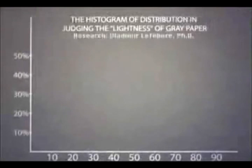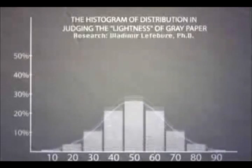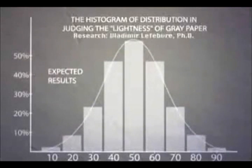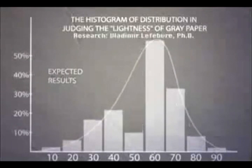For example, when you ask people to judge how dark a piece of grey paper is, the answers don't produce a bell curve, as you might think. They bulge at the 62% point.